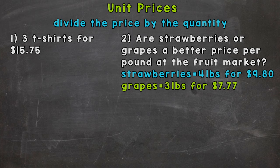We need to find how much one of those t-shirts costs, so the unit price. We do this by dividing the price by the quantity, and quantity just means number of something. So for number one we would